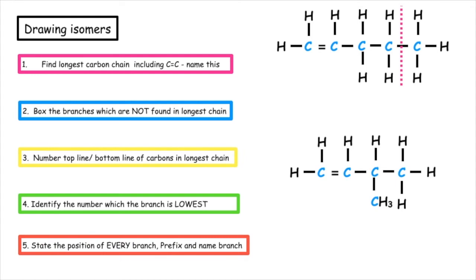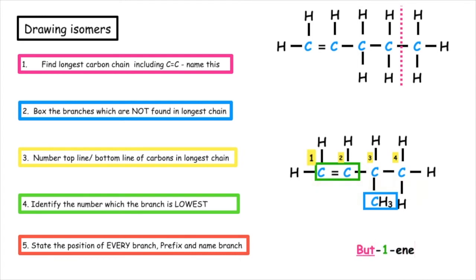We are now going to move that branch along to the other middle carbon and repeat the exact same process. The longest carbon chain that we have is four. The lowest position that the carbon-to-carbon double bond can be in is position one, so it would be known as but-1-ene. However, our branch has been moved and can be found on position three, so the name of this alkene is 3-methyl-but-1-ene.